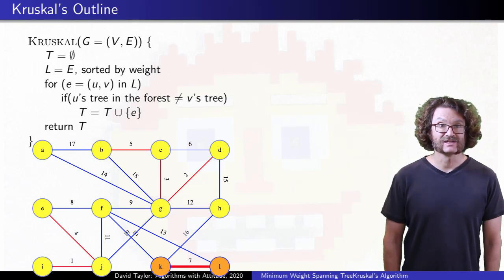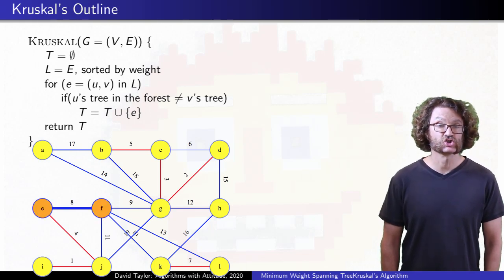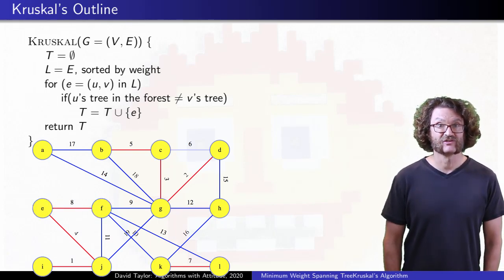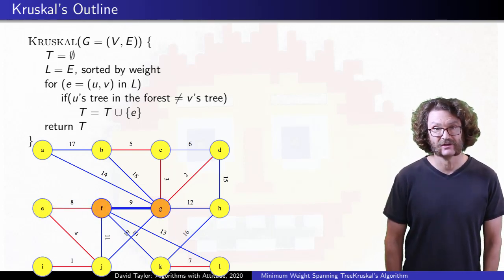But we left out the detail of how we determine whether or not the vertices of an edge are from the same forest tree or not. We could search the forest, starting from one of the vertices to see if we would get to the other, but that is kind of slow.